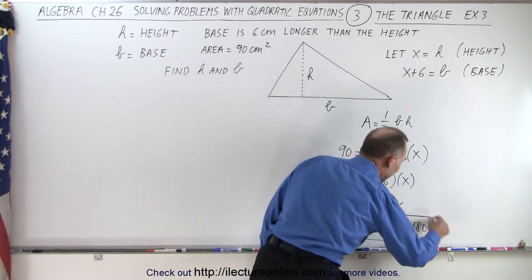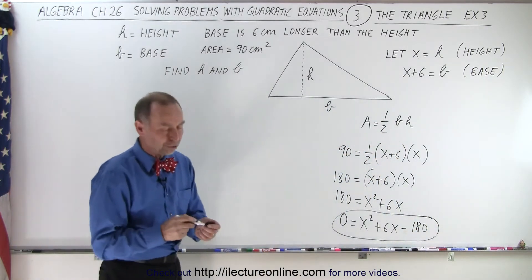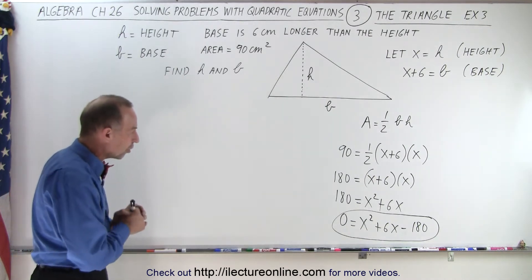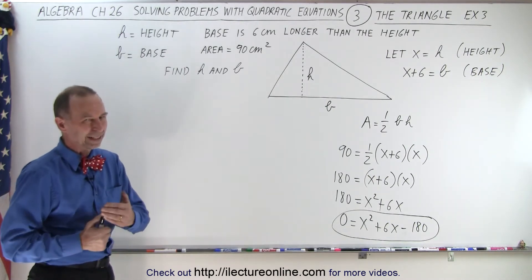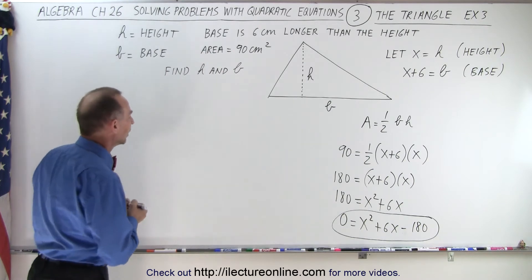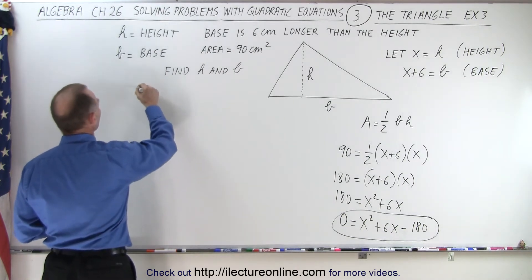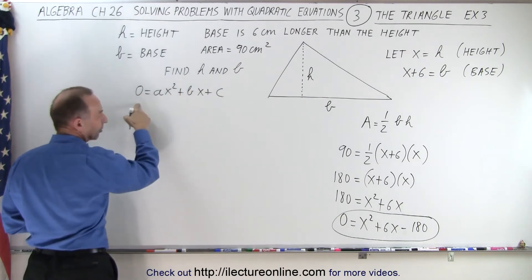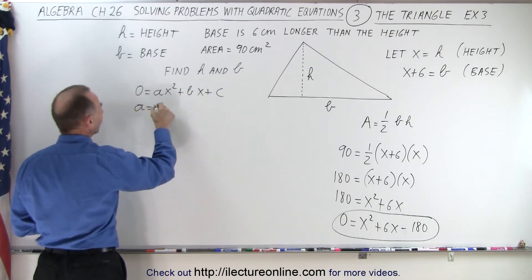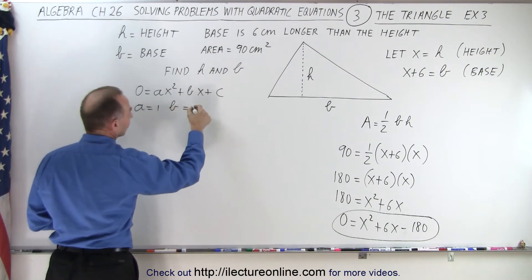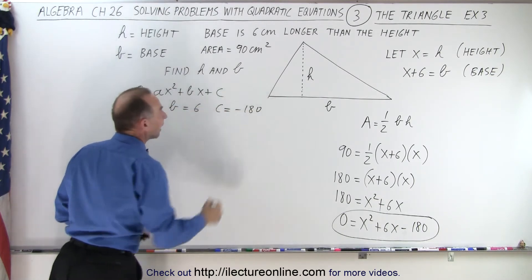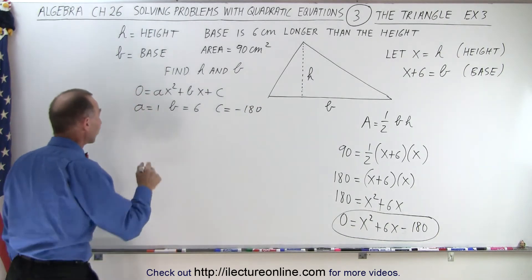Here we now have a quadratic equation, which we no longer have to fear because we have all kinds of good methods to solve it. Let's try the quadratic formula. We can see that 0 equals ax squared plus bx plus c. In this case, a is equal to 1, b is equal to 6, and c is equal to minus 180. Let's plug that into our quadratic formula.